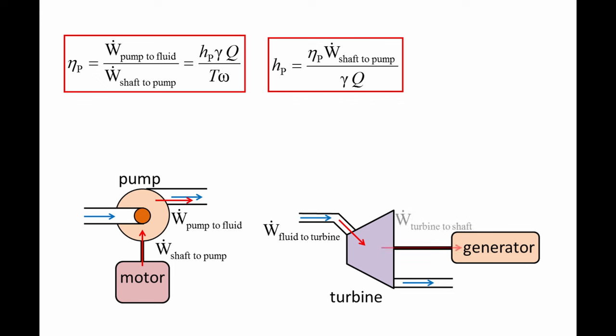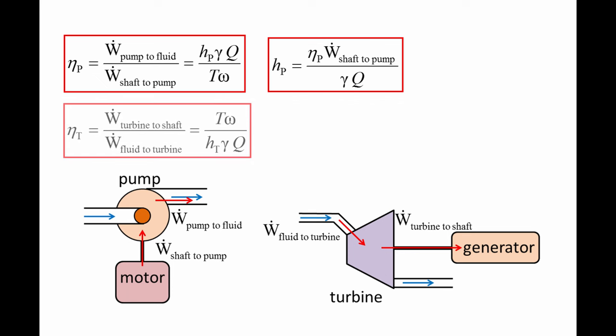Power is transferred from the turbine to a generator or other device through the rotating shaft. So, the efficiency of a turbine is the power transferred from the turbine through the shaft, divided by the power transferred from the fluid to the turbine.